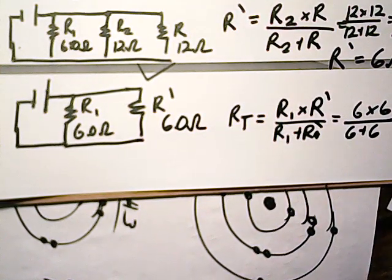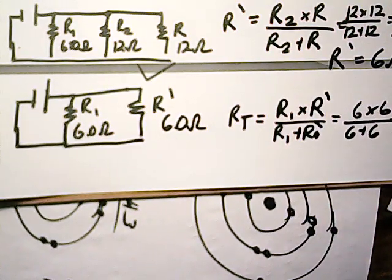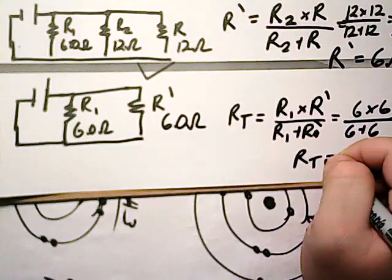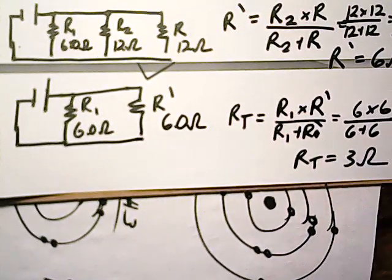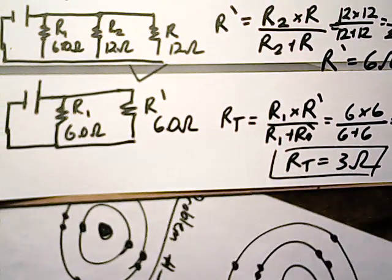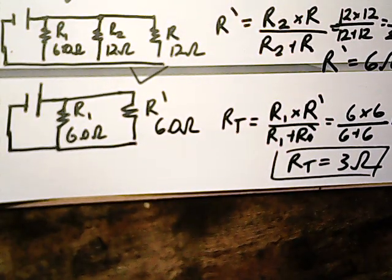So we get 36 divided by 12. 36 divided by 12. We should get a total of 3. So R total should be 3 ohms. So this is going to be moved on to part 2. Thank you.